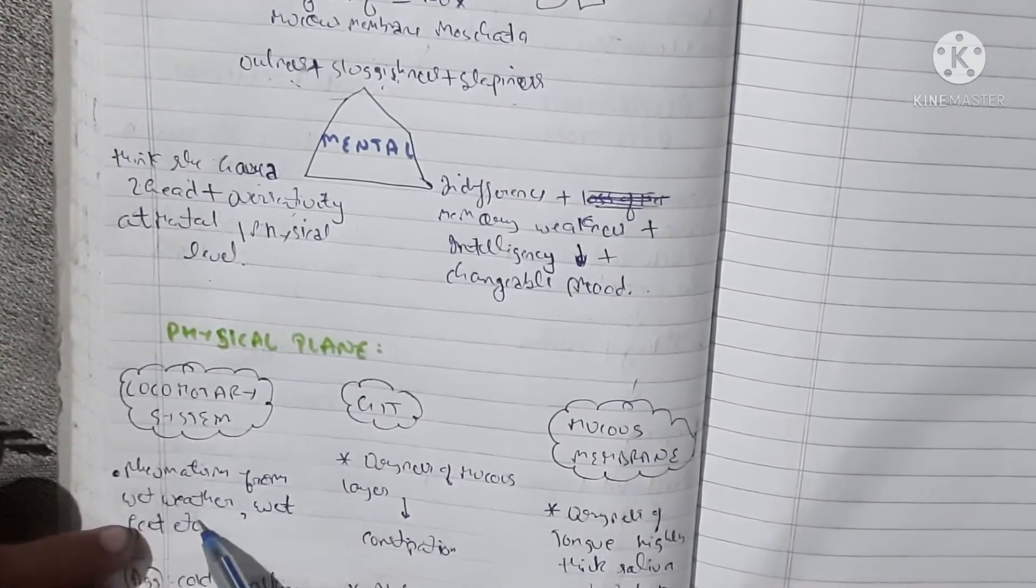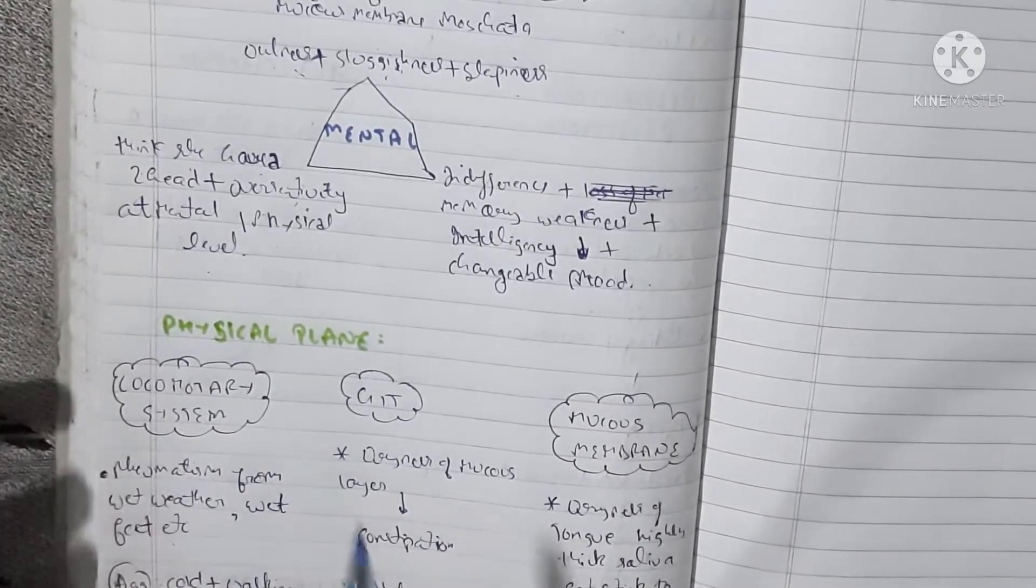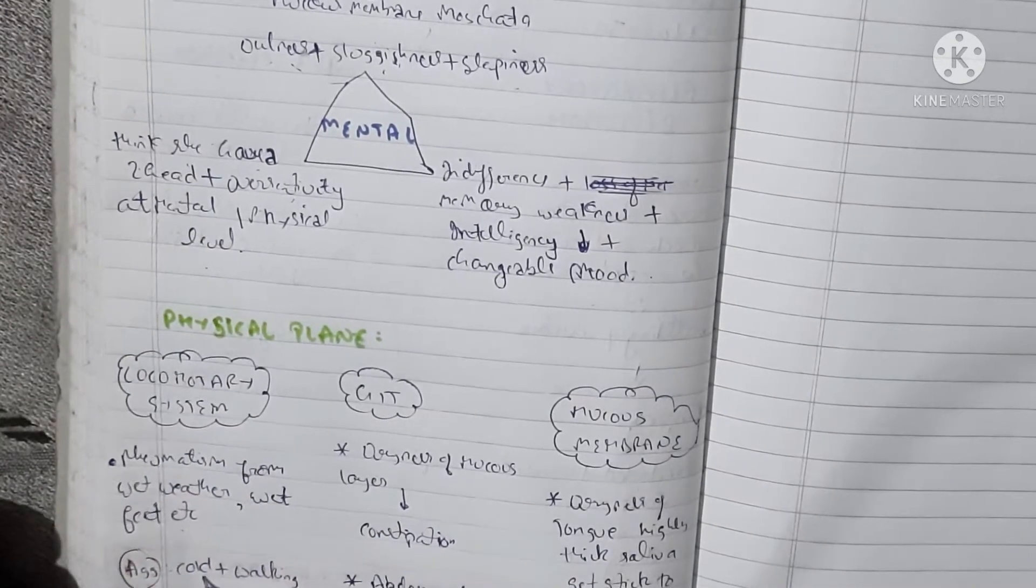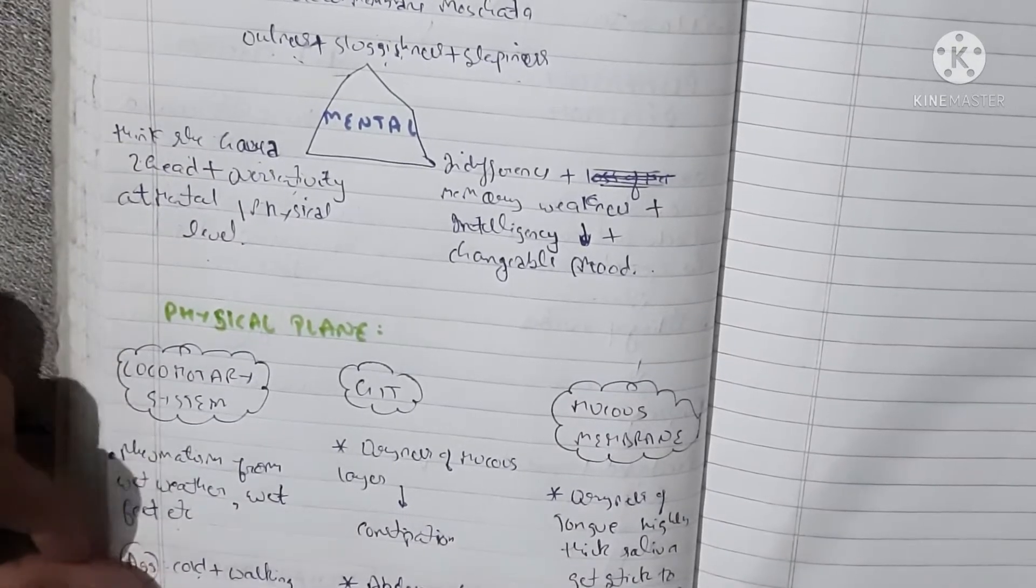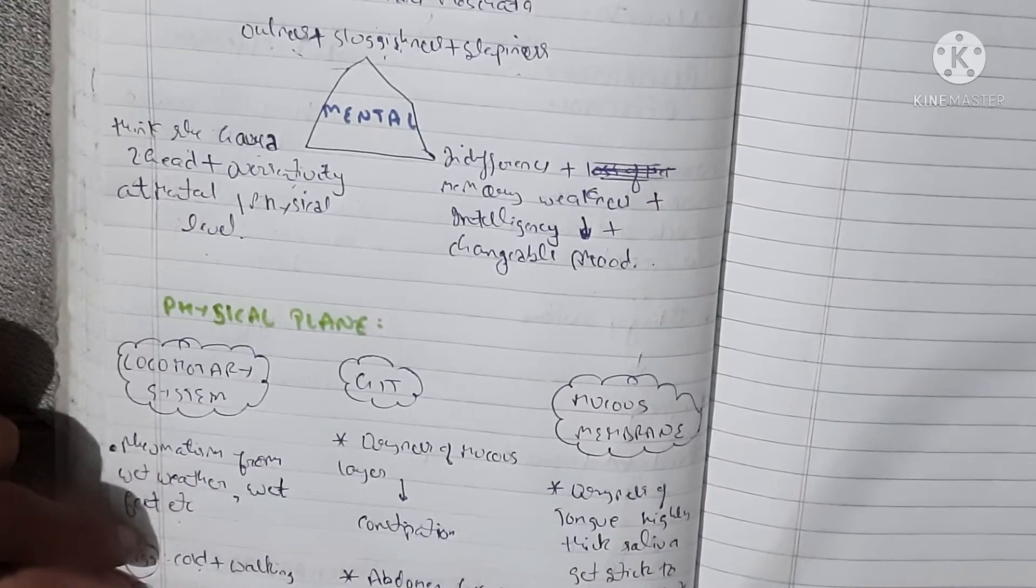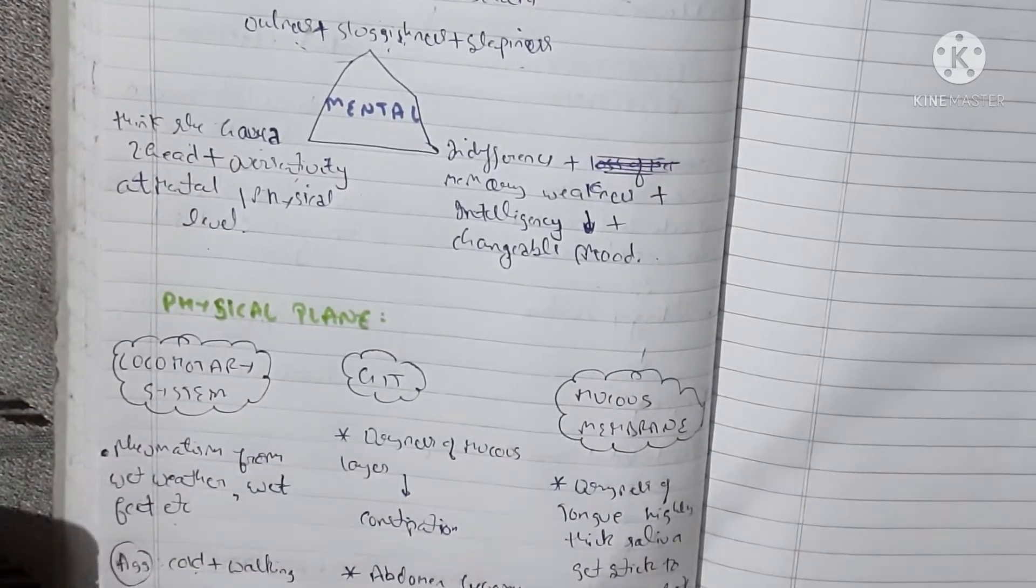Rheumatism from wet weather and wet feet. We can see rheumatic pains in the locomotive area which is worse from cold and walking, better from warmth. And from therapeutic point of view, worse from carriage riding. You can see Nux Moschata indicated.